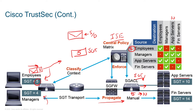Looking at the matrix, employees — group 5 — are trying to talk to an app server, which is group 10, and that would be allowed. If the employee was trying to access a finance server, which is group 14, that would be denied. This matrix is called the security group ACL. The actual access list entry — for example, permit access to port 22 — goes in a specific cell of the matrix.